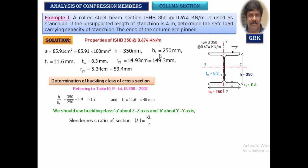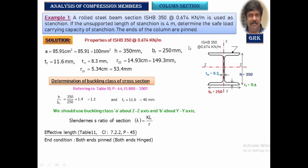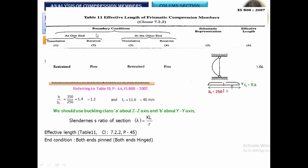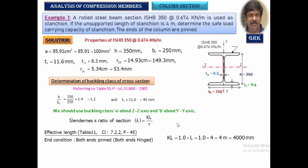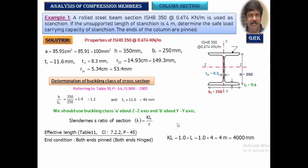Let us find the slenderness ratio. Lambda is given as KL/R, where L is the actual length and K is the coefficient corresponding to the end condition. Since both ends are pinned (hinged), looking at Table 11, K equals 1. Therefore, the effective length is 1 times the actual length, which is 4000 mm.